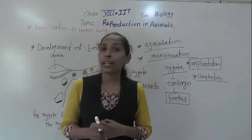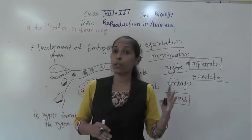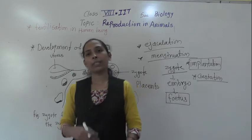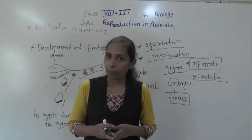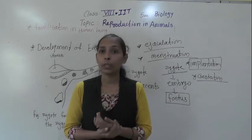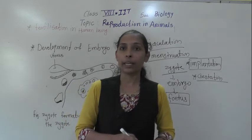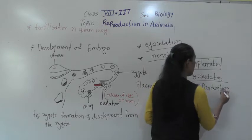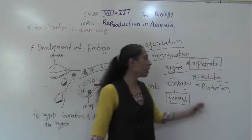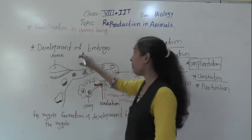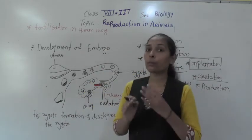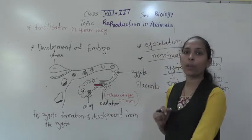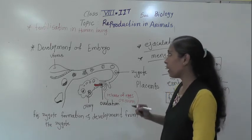It takes about 9 months for the proper growth and development of the baby. After 9 months, the development of the fetus is completed and the mother gives birth to the baby. The act of giving birth to the baby is called parturition. So this is all about the development of the embryo. Now we will go through the diagram.